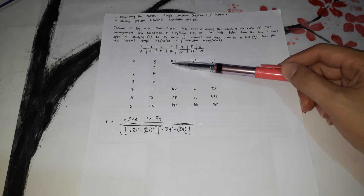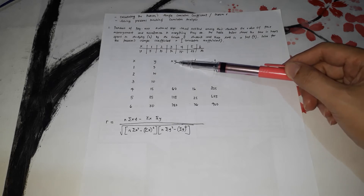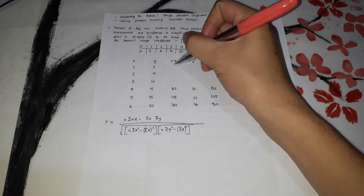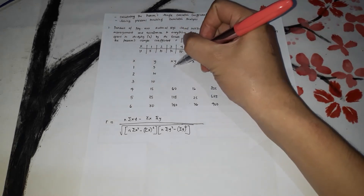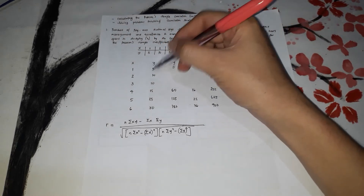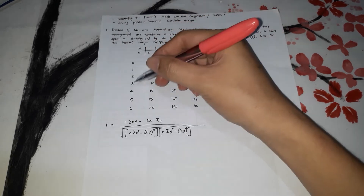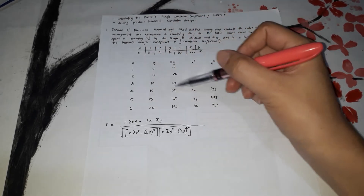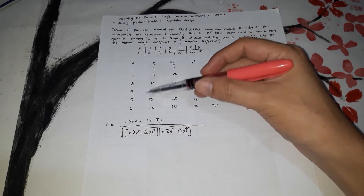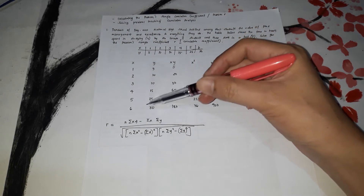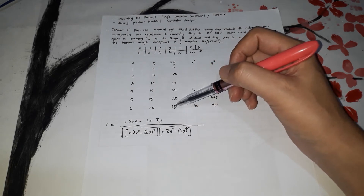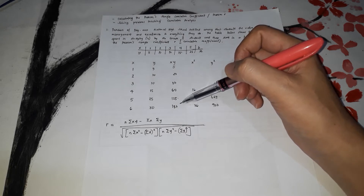XY means multiply X and Y. For number 1, it's 1 times 5, so it's 5. 2 times 10 is 20. 3 times 10 is 30. 4 times 15 is 60. 5 times 25 is 125. 6 times 30 is 180.